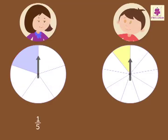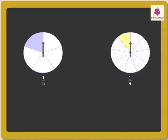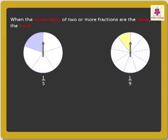Andy wins this round as he colored more than Anaya. Next round is coloring the spinners. Anaya painted one-fifth of the spinner and Andy painted one-ninth of the spinner. Let us find out who colored more. Look, here the numerators are the same. When the numerators of two or more fractions are the same, the fraction with the smaller denominator is greater.